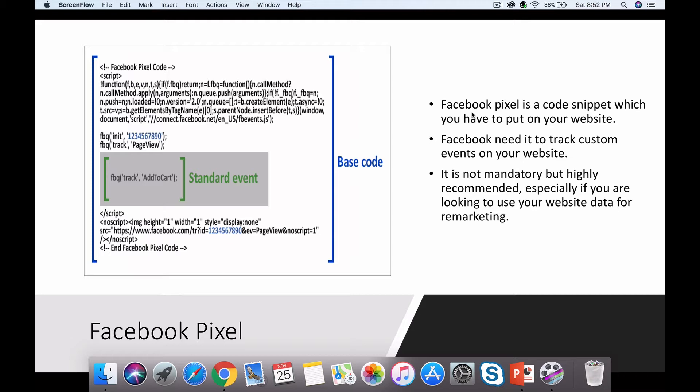If you have used Google Analytics or StatCounter in the past, you will know that basically you go to your ad platform, enter some data, and then Facebook or any other tool will give you a code snippet. You then take that code and put it on your website. This helps set up a connection between your website and Facebook.